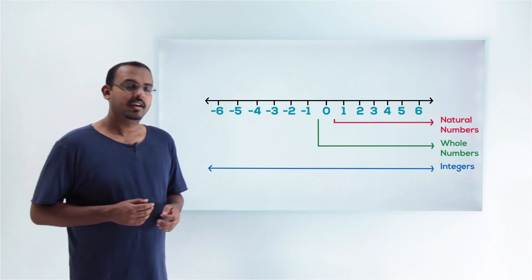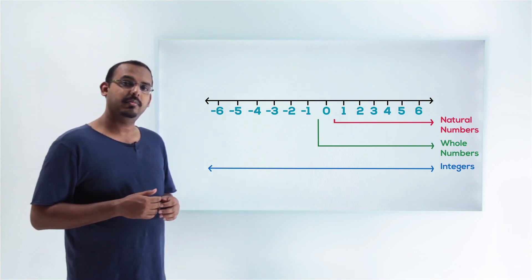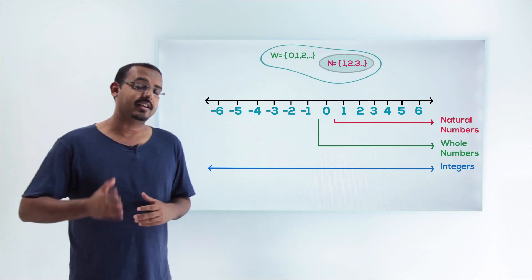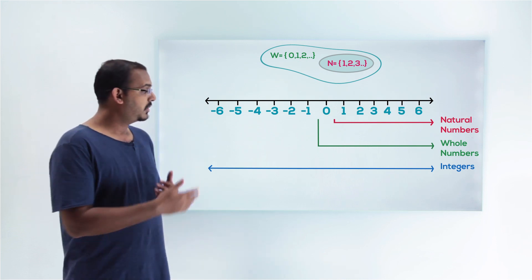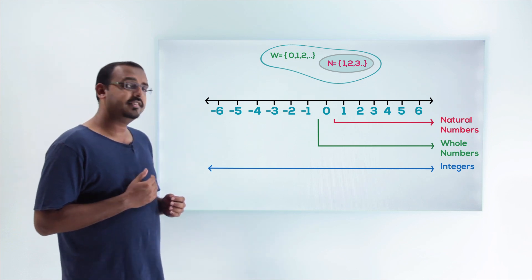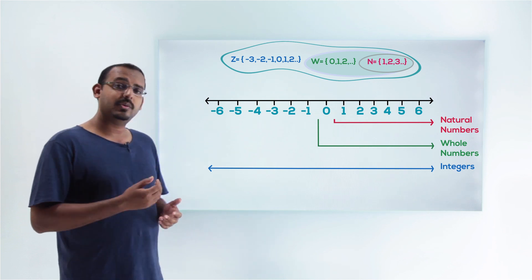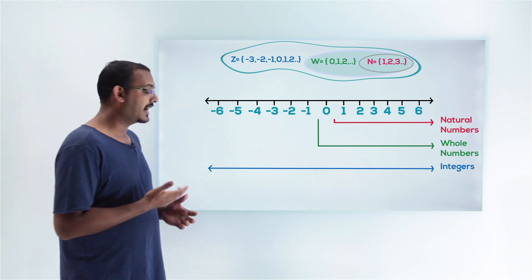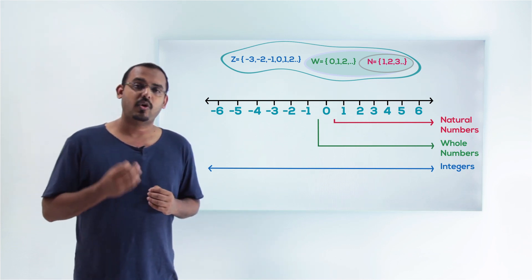Notice something interesting here. We can see that all the natural numbers are included in the whole numbers. In other words, the set of natural numbers is actually a subset of the set of whole numbers, because all the natural numbers are contained in the whole numbers. Also, all the whole numbers are included in the integers — so the set of whole numbers is actually a subset of integers.